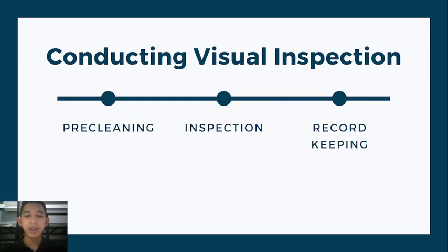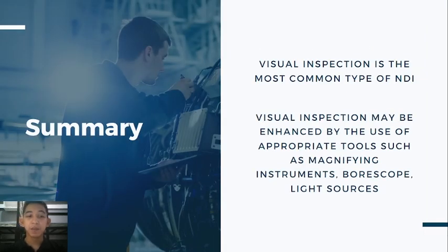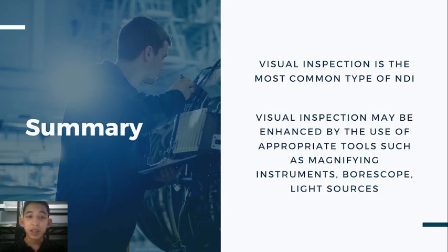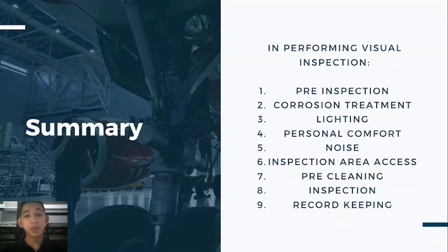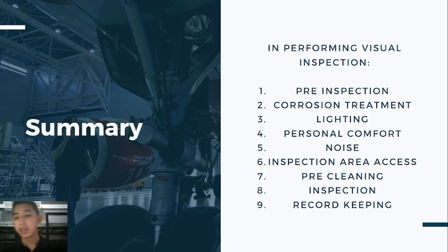That's it for visual inspection. To recap: visual inspection is the most common type of NDI, enhanced by tools such as magnifying instruments, borescope, light sources, and video scanners. It is inexpensive, highly portable, provides immediate results, and requires minimum training and part preparation. However, you can only detect surface discontinuities, and generally only large ones, with risk of misinterpretation of scratches. The nine steps to perform visual inspection are: preliminary inspection, corrosion treatment, lighting, personal comfort, noise, inspection area access, pre-cleaning, inspection, and record keeping.